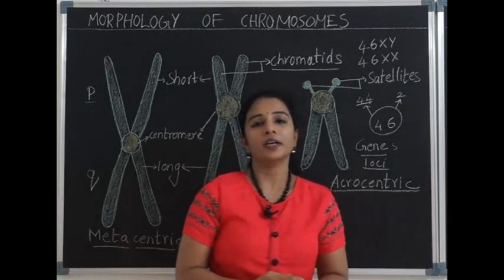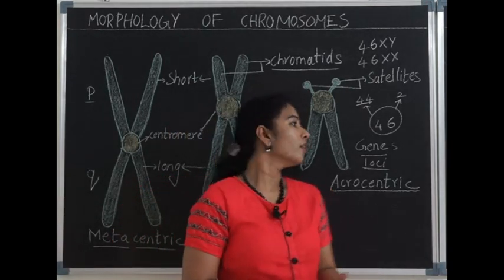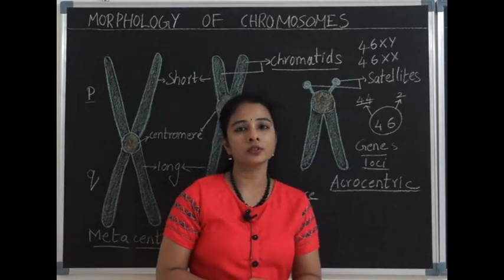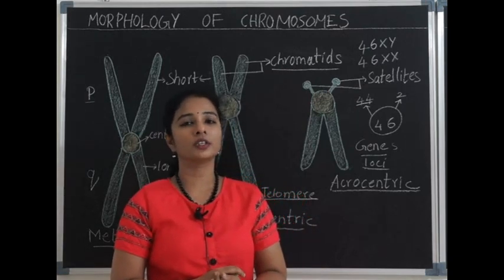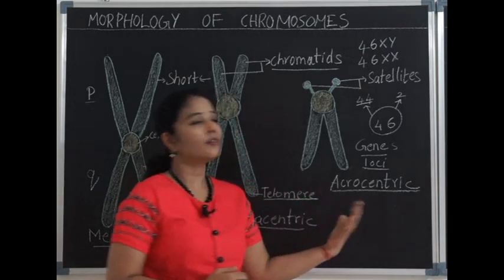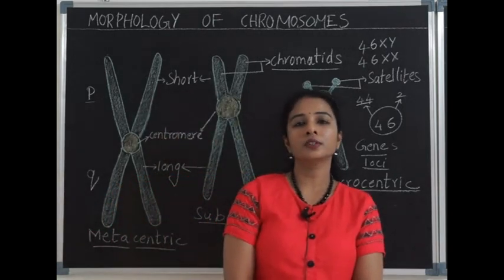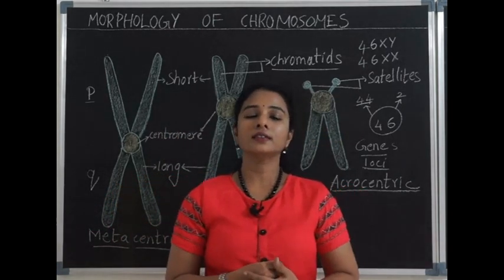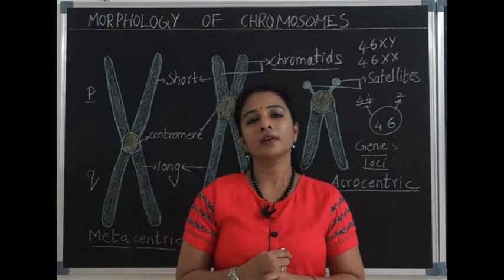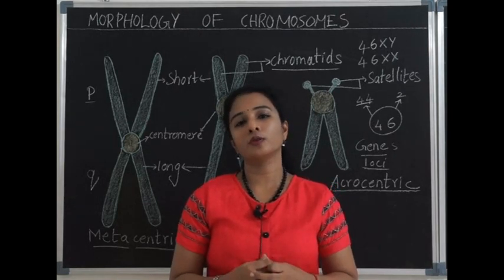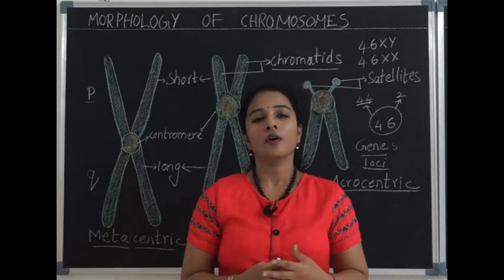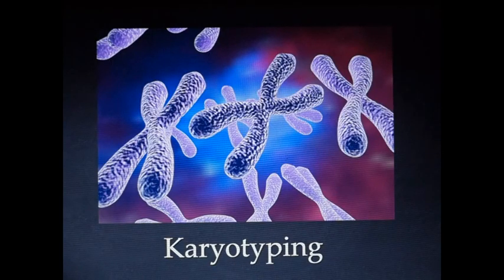There is one more variety of chromosomes which are called telocentric, where they consist of only long arms, that is Q arms. No P arms are present in telocentric, and telocentric chromosomes are not seen in humans. These are the varieties of chromosomes. Let's understand what is karyotyping and what is the procedure of karyotyping and how to classify the chromosomes and obtain the karyogram or ideogram of a person.